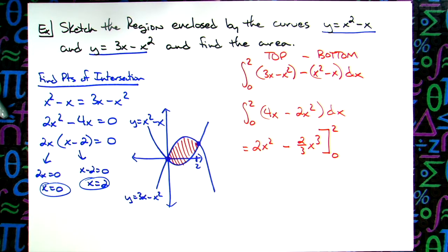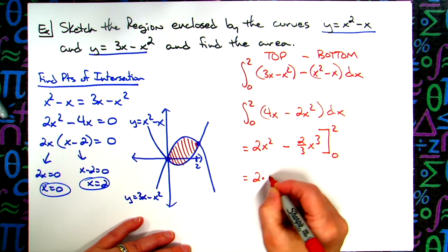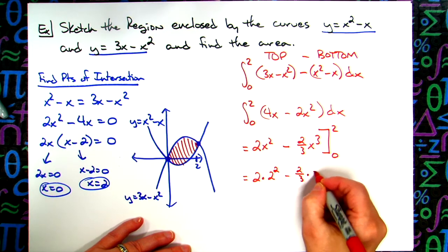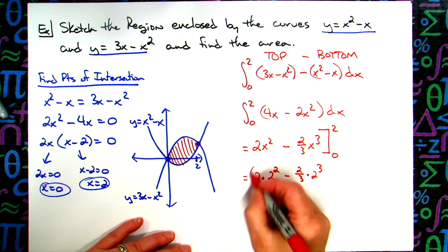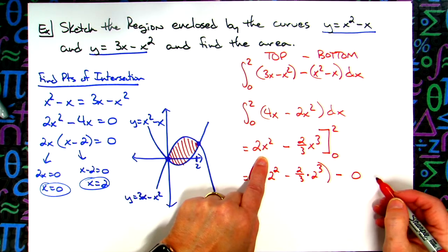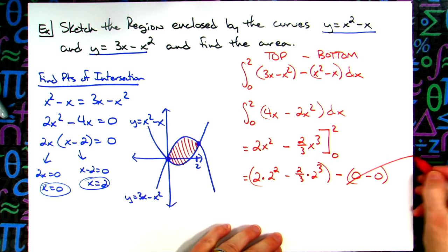Now to do the evaluating part we'll plug 2 in and subtract plug in 0. Plugging in the 2, we'll have 2 times 2 squared minus 2 thirds times 2 to the third minus, we plug in 0, we're going to have 0, plug in 0 again, minus 0. So basically all of that just falls out.